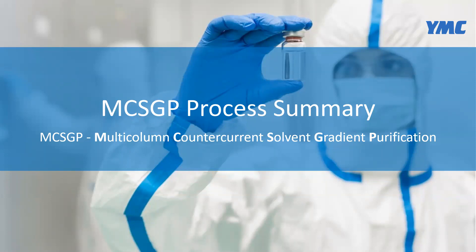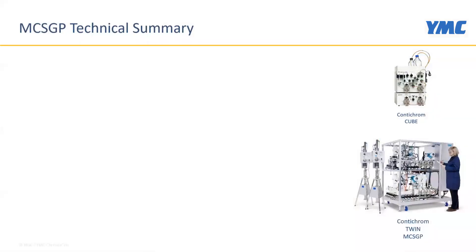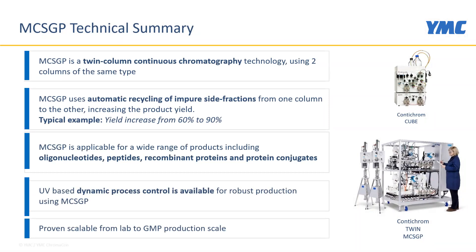MCSGP stands for multi-column countercurrent solvent gradient purification. As the name says, it's a multi-column process, and over the years we've boiled it down to two columns. So MCSGP is a twin-column continuous chromatography technology using two columns of the same type. It uses automatic recycling of impure side fractions from one column to the other, thereby increasing product yield. A typical example is a yield increase from 60 to 90 percent, or from 80 to 95 percent.